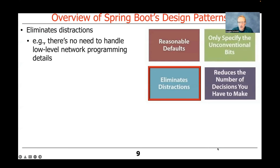Another goal of convention over configuration is to eliminate distractions, and this is very important. When you program with Spring and you're comfortable with both the client side and the microservices or monolithic back end, there's really no need to care about how to perform low-level network programming. In many cases, you don't even have to think much about concurrency — a lot of those things are handled for you by the framework. You just focus on defining your interfaces using special annotations, and then a lot of code is generated for you.